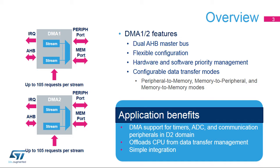The Direct Memory Access, or DMA, embedded on the STM32H7 series is used to provide high-speed data transfers between peripherals and the memory, and between memory and memory. Data can be quickly moved by the DMA without any CPU action, keeping CPU resources free for other operations. The DMA controller combines a powerful dual-AHB master bus architecture with an independent FIFO to optimize the system's bandwidth, based on a complex bus matrix architecture.